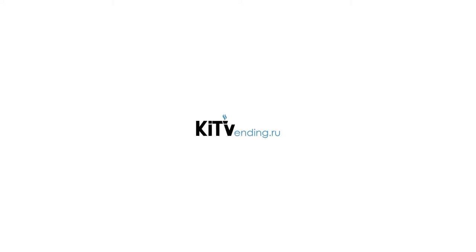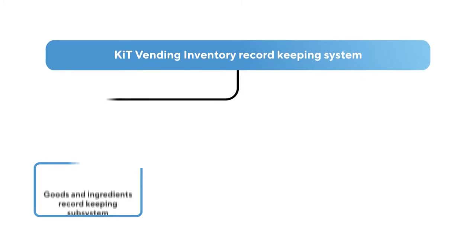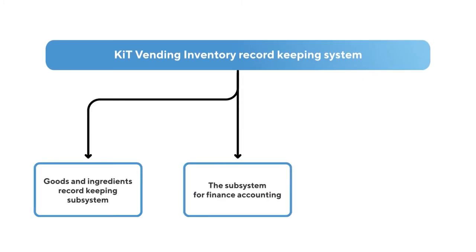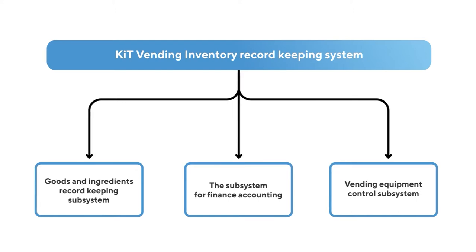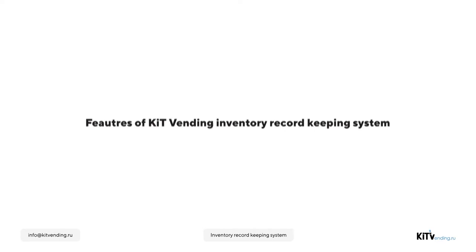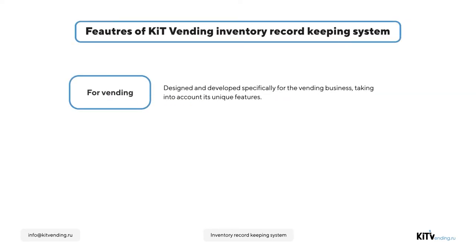Kit Vending Project reveals its newest solution: the Vending Record Keeping System, developed in cooperation with leading experts of the Vending Machine Operators Union. The system incorporates the goods and ingredients record keeping subsystem, the subsystem for funds accounting, and the equipment control subsystem. One of the system's distinctive features is that it was designed specifically for the vending business, with attention paid to its unique attributes.